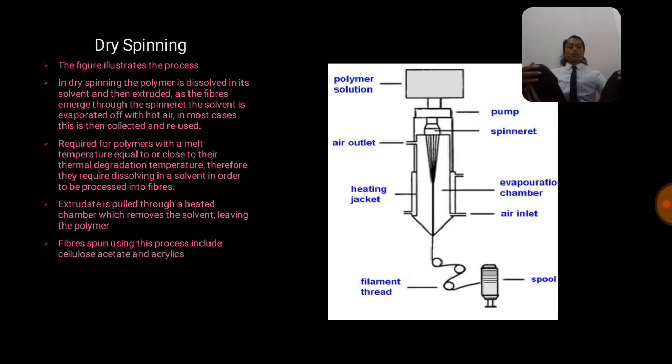Next is the dry spinning. The figure illustrates the process of the dry spinning. In dry spinning, the polymer is dissolved in a solvent and then extruded. As the fibers emerge through the spinneret, the solvent is evaporated off with hot air in most cases, and is then collected and reused. This type of spinning is required for polymers with a melt temperature equal to or close to their thermal degradation temperature. Therefore, they require dissolving in a solvent in order to be processed into fibers. Extrudate is pulled through a heated chamber which removes the solvent leaving the polymer. Fiber spun using this process include cellulose acetate and acrylics.